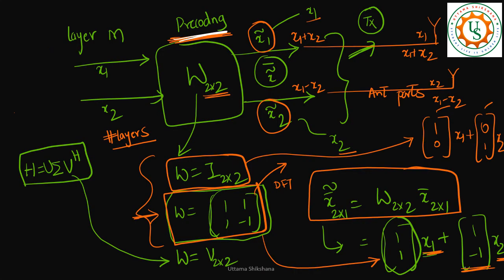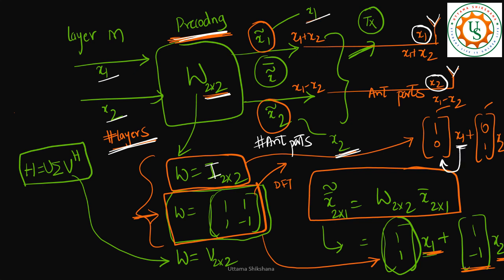In the pre-coding block, the input is coming from the layer block. I had considered a 2x2 case, so the number of layers is 2. The input to this block is the number of layers and the output is in the number of antenna ports. Here I considered 2 antenna ports connected to 2 different physical antennas. The first case is when W is equal to the identity matrix — in this case x̃1 equals x1 and x̃2 equals x2, so across antenna 1 only x1 is transmitted and across antenna 2 only x2 is transmitted.